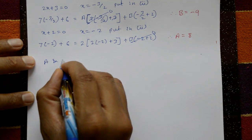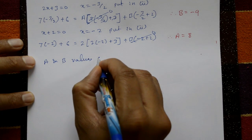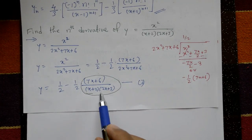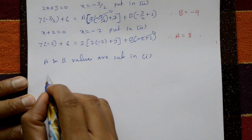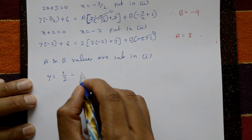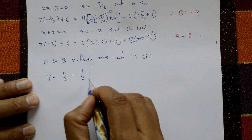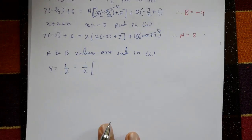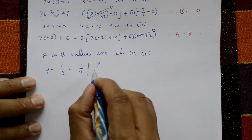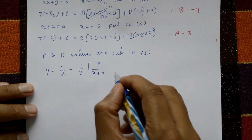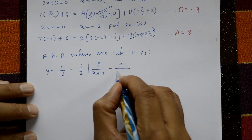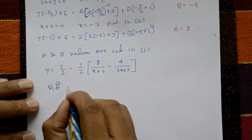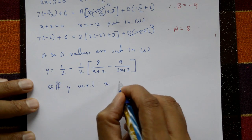Substitute A and B values in equation number 1: y = 1/2 minus (1/2) · [8/(x+2) + (-9)/(2x+3)]. Now differentiate y with respect to x, n times.